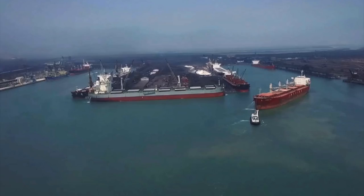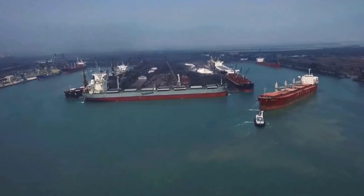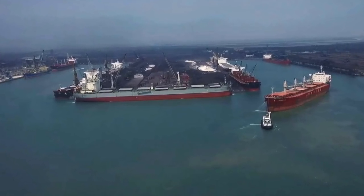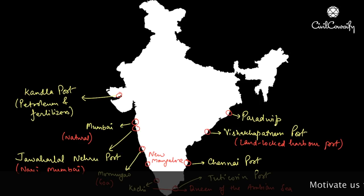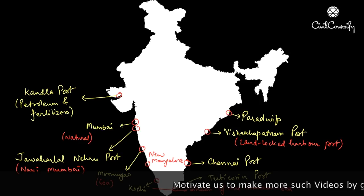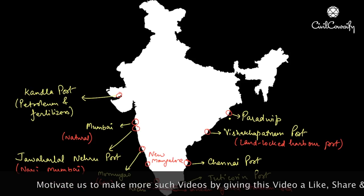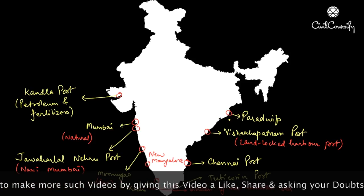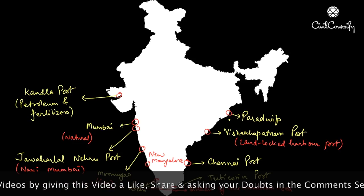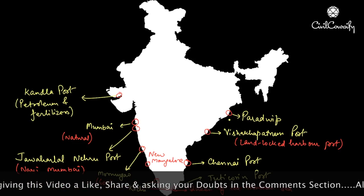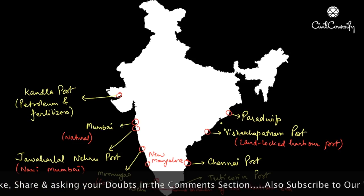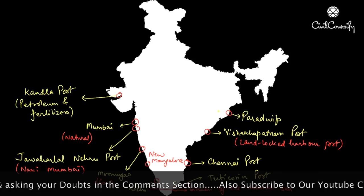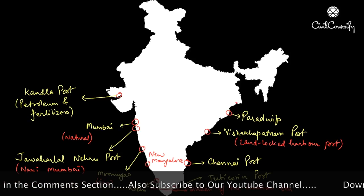Next is Paradip in Odisha. Paradip is located in the Mahanadi Delta and has the deepest harbour, specially suited to handle very large vessels. It has been mainly developed to handle large-scale exports of iron ore and it caters to the needs of Odisha, Jharkhand and Chhattisgarh.